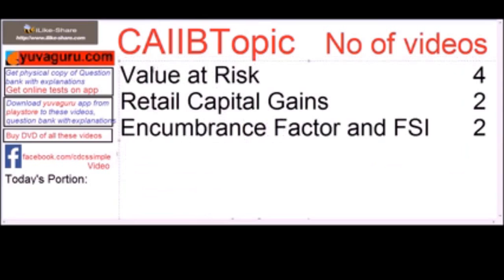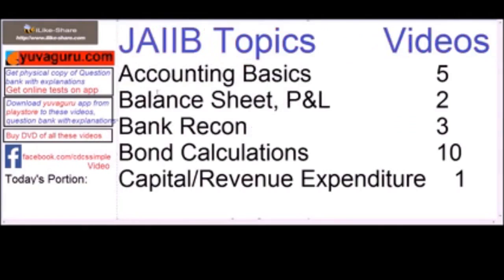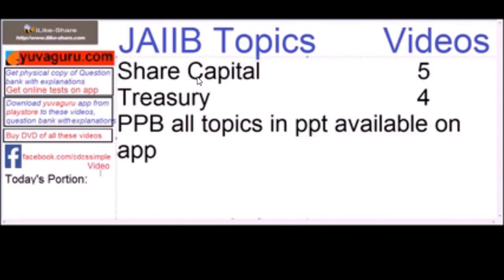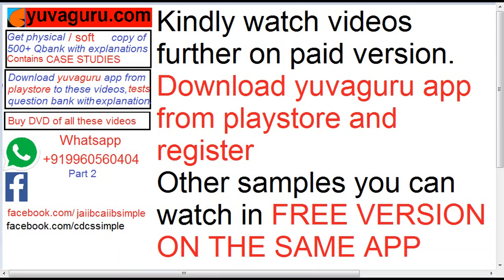Further topics include value at risk, retail capital gains, and income. For CIB it also covers accounting basics, balance sheets, P&L, bank records, bond calculations, capital revenue expenditure, NPV and IRR, depreciation, trial balance, forex, present and future value, and ratio analysis. All topics are available in PPT format. Legal topics are also being prepared, and the number of videos keeps increasing day by day.